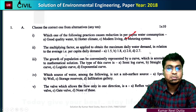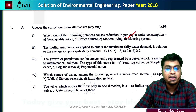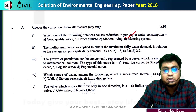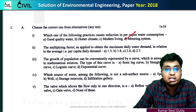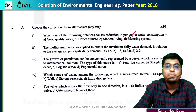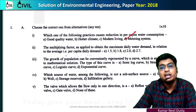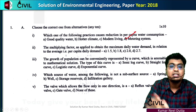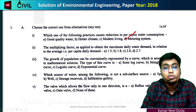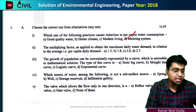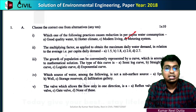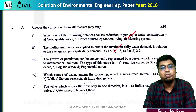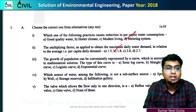Number 2 asks about the multiplying factor. The multiplying factor as applied to obtain the maximum daily water demand — when you multiply the average with this factor, you get the maximum daily water demand. The answer will be 1.8, so option B will be the correct.